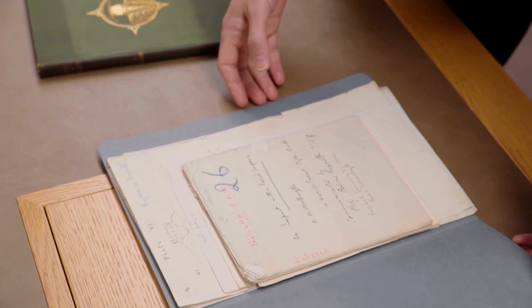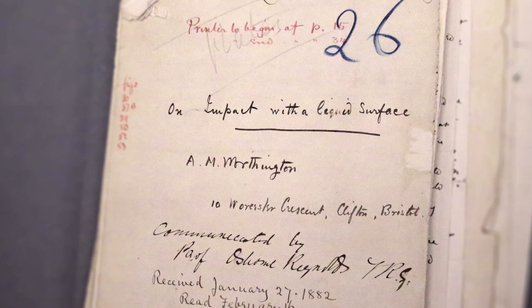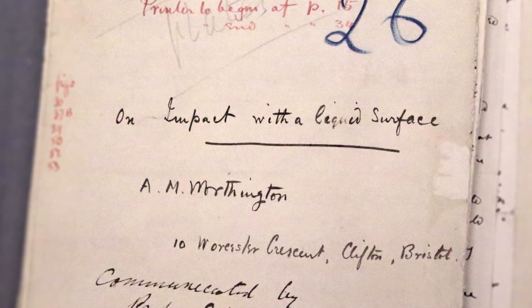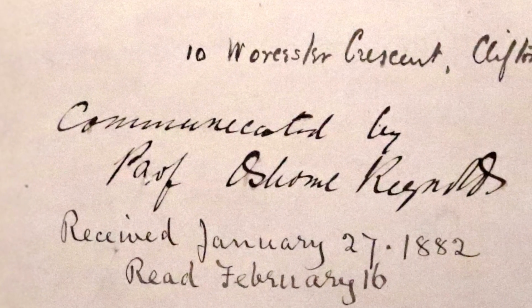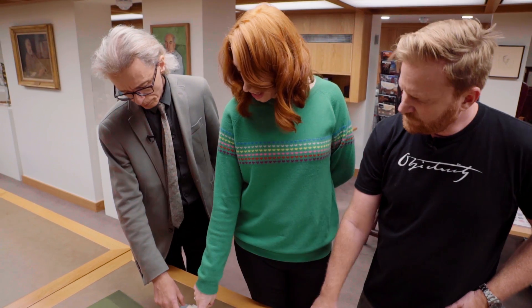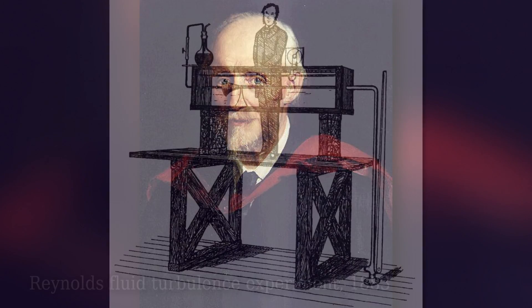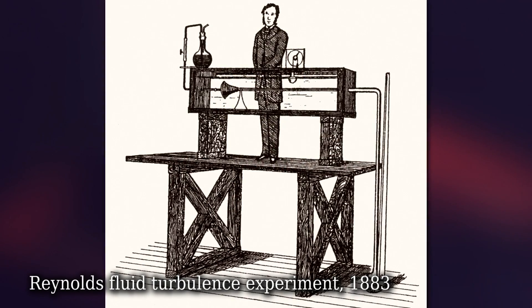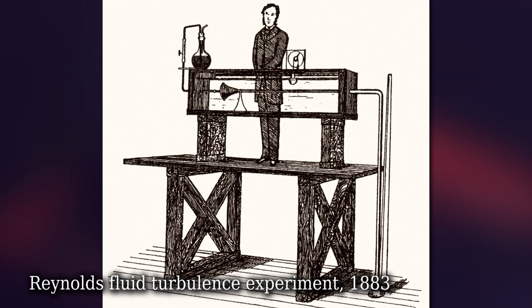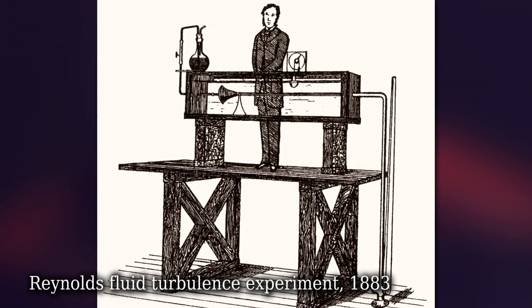This is another paper of his - on impact. This is what he's really good at: impacts on liquid surfaces. Communicated by Professor Osborne Reynolds, FRS. Reynolds is a very big deal in the fluids world. There's something called the Reynolds number, named after him, that really characterises what kind of flow you've got - the difference between gloopy honey or wind rushing past an aircraft. Essentially it's the same equations, but it's the Reynolds number that tells you the difference.